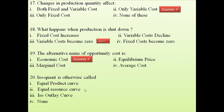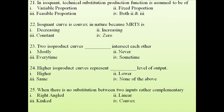Question 20: Isoquant is otherwise called what? 'Iso' means equal and 'quant' means quantity — equal quantity of product. There are many synonyms covered in the isoquant lecture. The answer is equal product curve — isoquant is otherwise called the equal product curve.